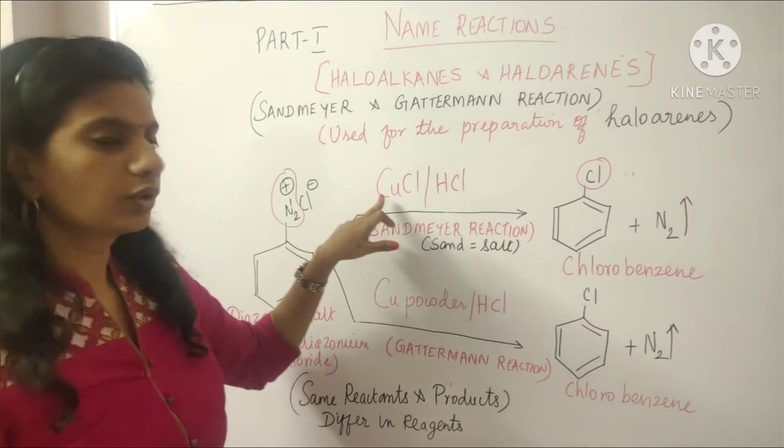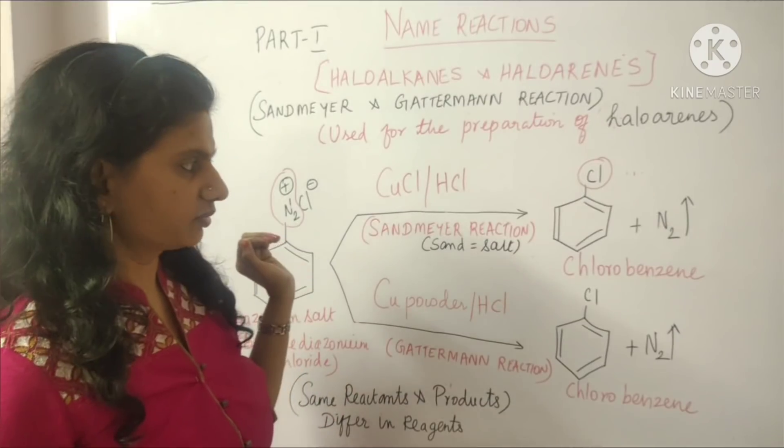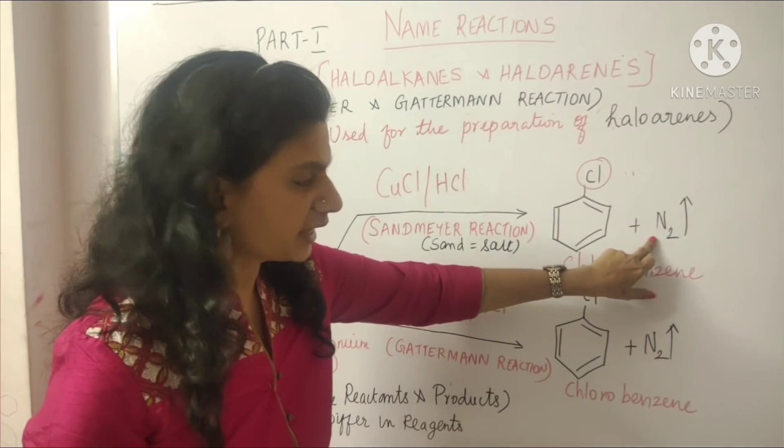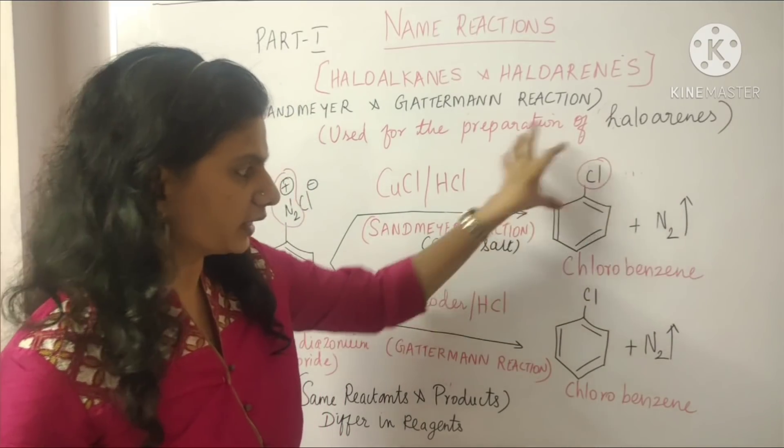Instead of that, you can take cuprous chloride or cuprous bromide or cuprous iodide, like that. And finally here, this N2 gas is escaped, released. So we are getting the product chlorobenzene.